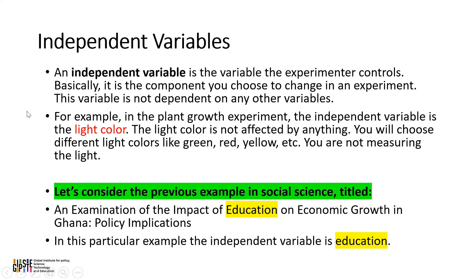For example, in the plant growth experiment, the independent variable is the light color. The light color is not affected by anything — you choose different light colors like green, red, yellow, or any other color. You are not measuring the light; what you are measuring is plant growth. In the social science example, An Examination of the Impact of Education on Economic Growth in Ghana, the independent variable is education, because you are using education to explain economic growth.